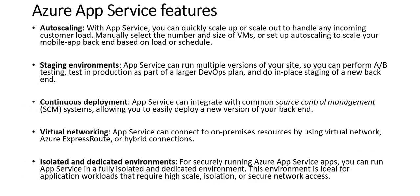Now let's look at Azure App Service features in general — these apply to mobile apps, API apps, logic apps, and web apps. For auto-scaling, you can quickly scale the environment up or out, in size or number of instances, to handle any incoming customer load. App Service also comes with staging environments, including production and staging slots, which you can use for AB testing and testing in production for DevOps planning.